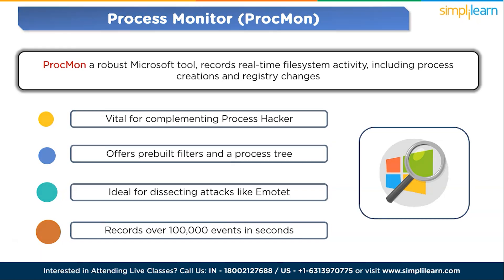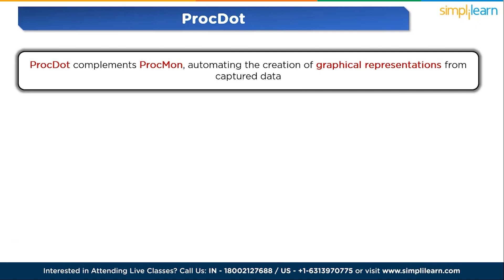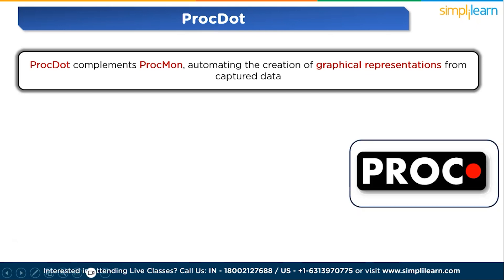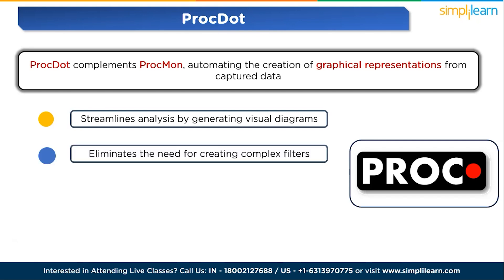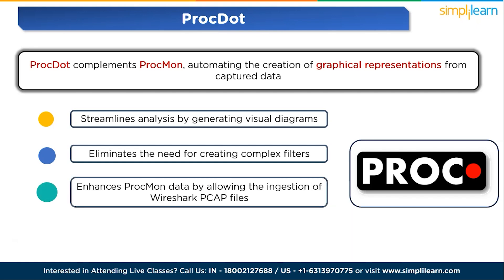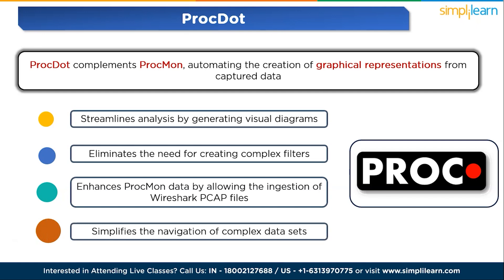The fourth tool is Proc Dot. Proc Dot complements ProcMon by automating the creation of graphical representations from captured data. It streamlines analysis by generating visual diagrams from uploaded ProcMon CSV files, providing a user-friendly visual representation of malware activity. In integration with Wireshark, it enhances ProcMon data by allowing the ingestion of Wireshark PCAP files, providing a more comprehensive view of network interactions. It simplifies the navigation of complex data sets, making it accessible to analysts without extensive filtering expertise, and enriches ProcMon data by incorporating additional information from tools like Wireshark.